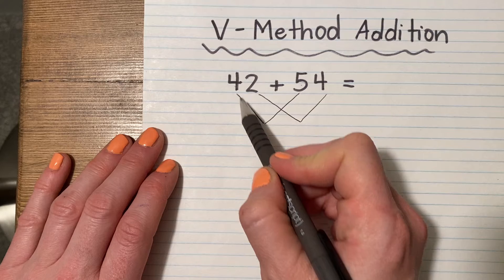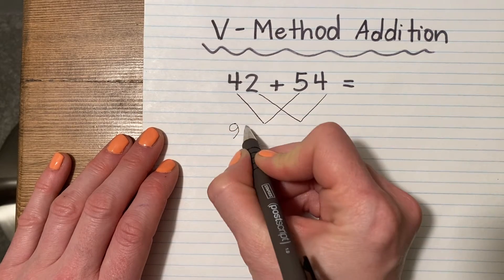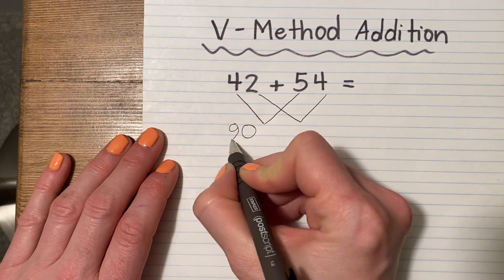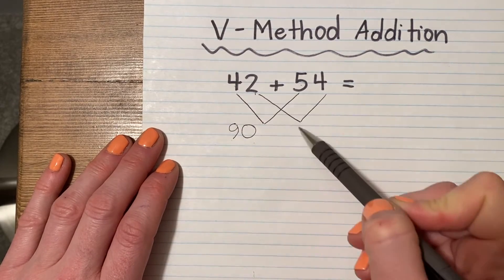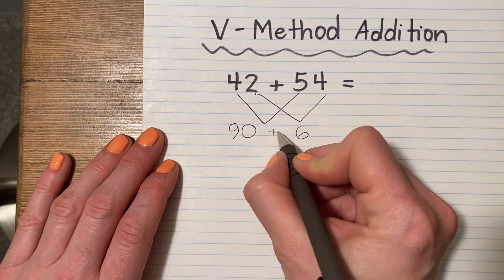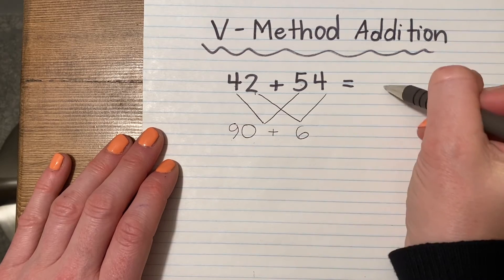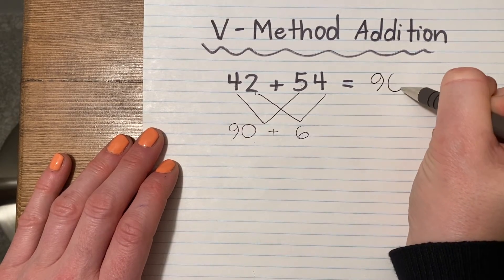So you know that 40 plus 50 is 90 or 9 and place the 0. Then you have 2 and 4 is 6. All you have to do is add 90 plus 6 to get to your answer, 96.